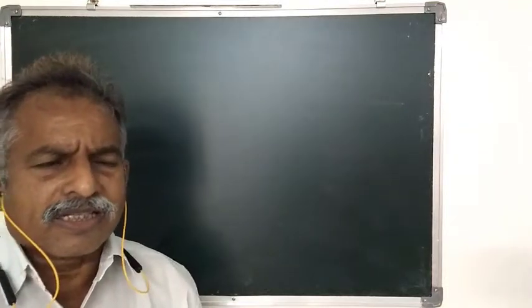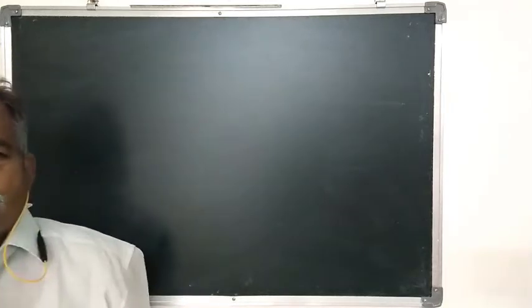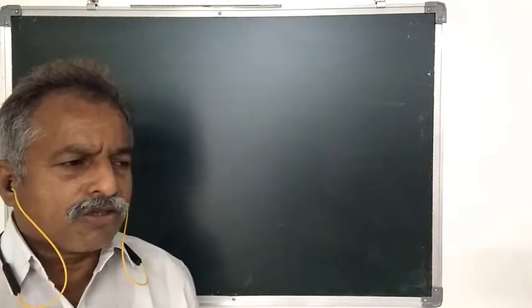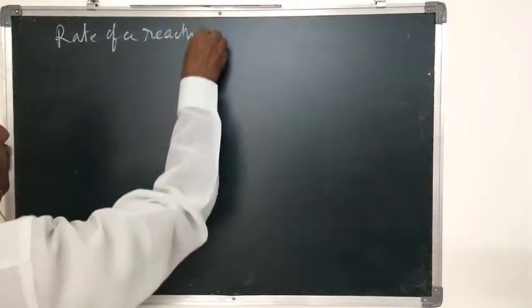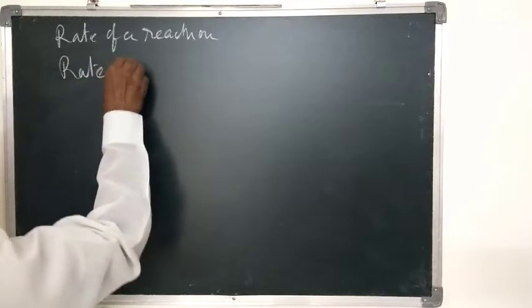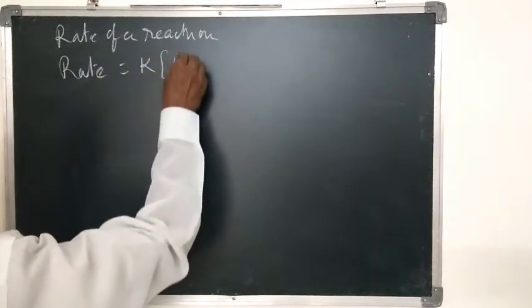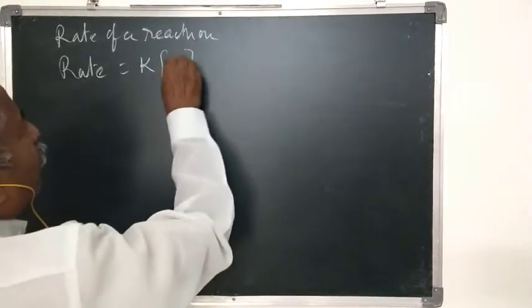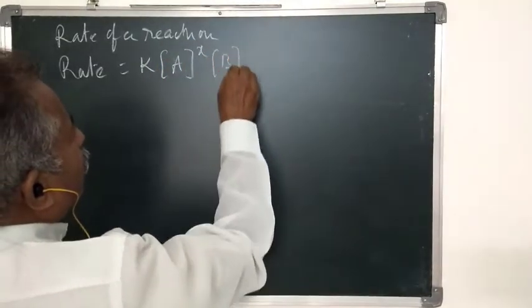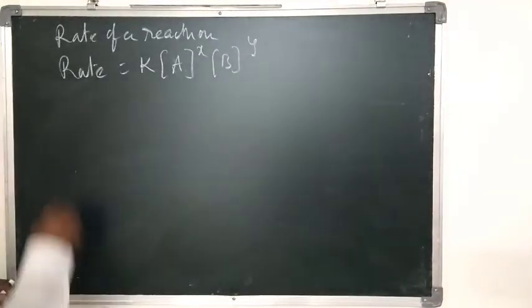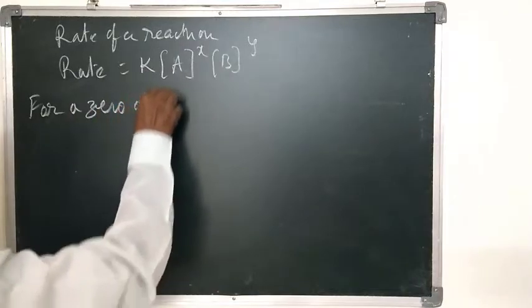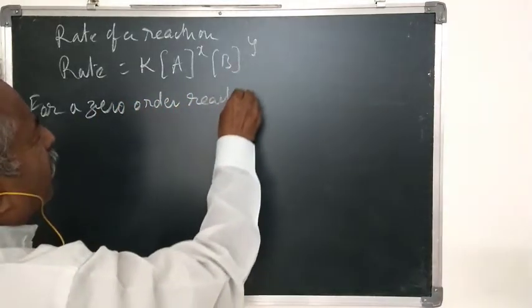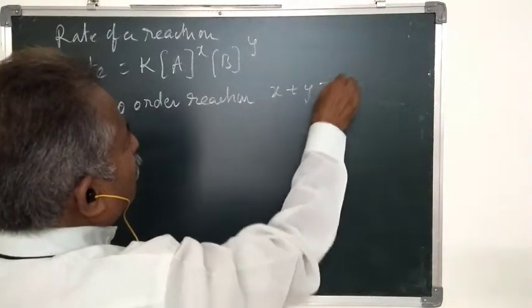Now let us discuss the units of rate constant of different orders of reaction. Rate of a reaction is given by: rate equal to K into A to the power X into B to the power Y. For a zero-order reaction, X plus Y is equal to zero.